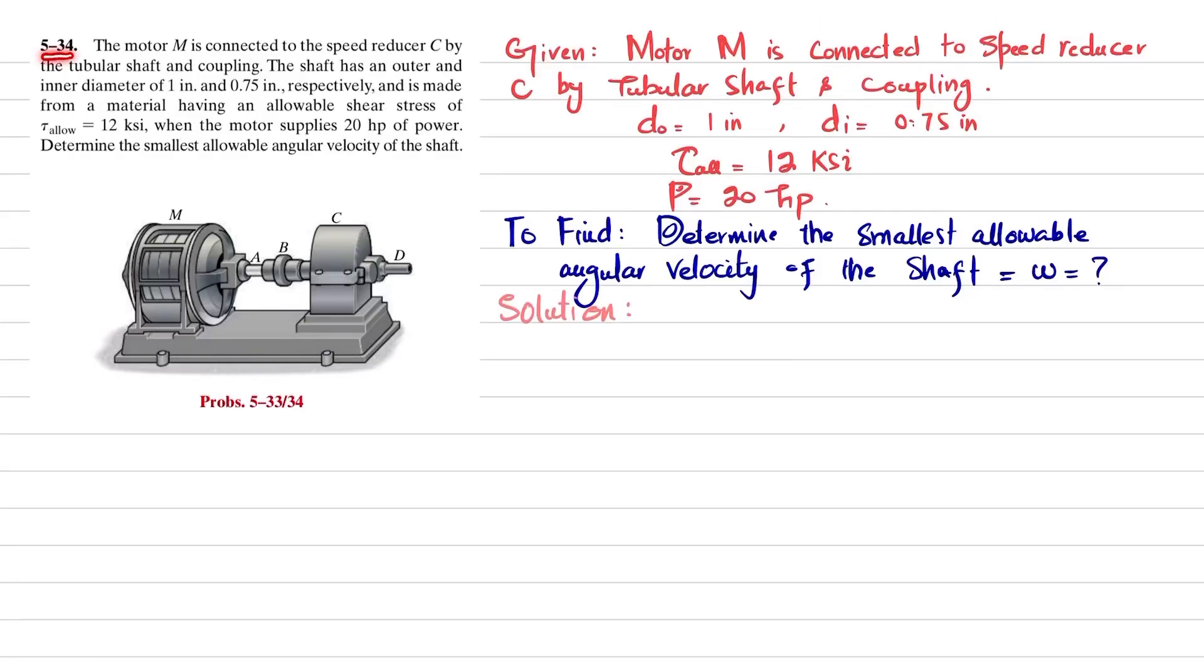Welcome back to Problem 5-34. The statement is: the motor M is connected to speed reducer C by tubular shaft and coupling. You can see this is a motor M and this is a speed reducer that are connected by a shaft at coupling.